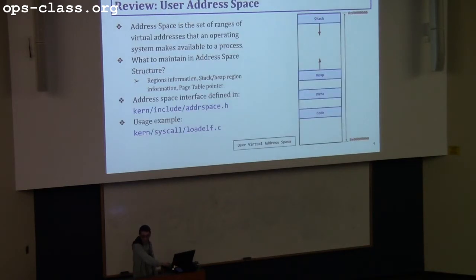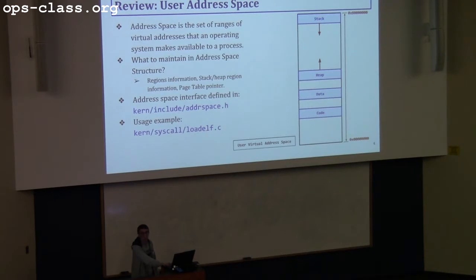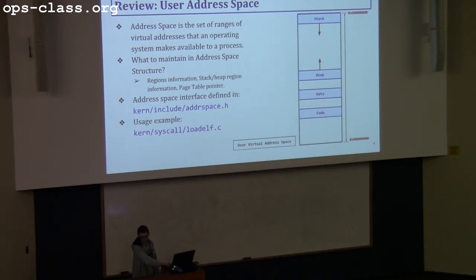We covered the user address space, which is the set of virtual addresses that the kernel makes available to the user process. Information you need to keep in your address space includes region information, stack and heap information, and a reference to your page table. We covered the interfaces and you have an example in loadelf.c.